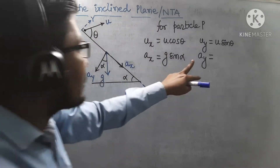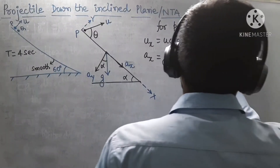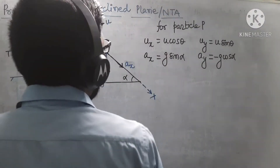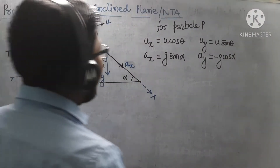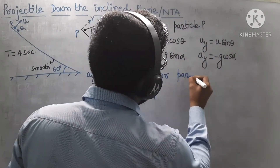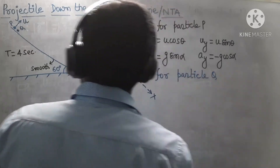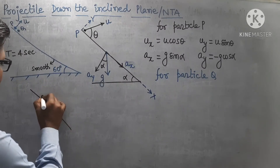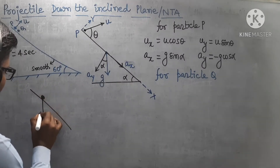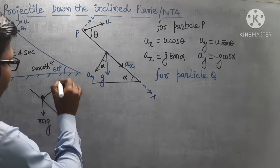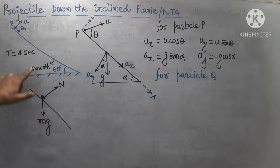So ax = g sinα and ay = g cosα. Now for particle Q — the inclined plane is smooth, so there is no friction. The forces on Q are: the normal force balancing the Mg cosα component, while Mg sinα acts along the inclined plane.